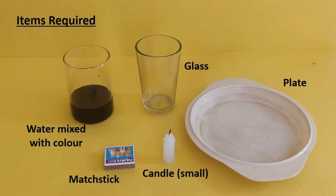For this experiment, we require a glass, a candle that is shorter than the glass, a matchbox, a plate, and some water mixed with colour — like either potassium permanganate, ink, or food colour.